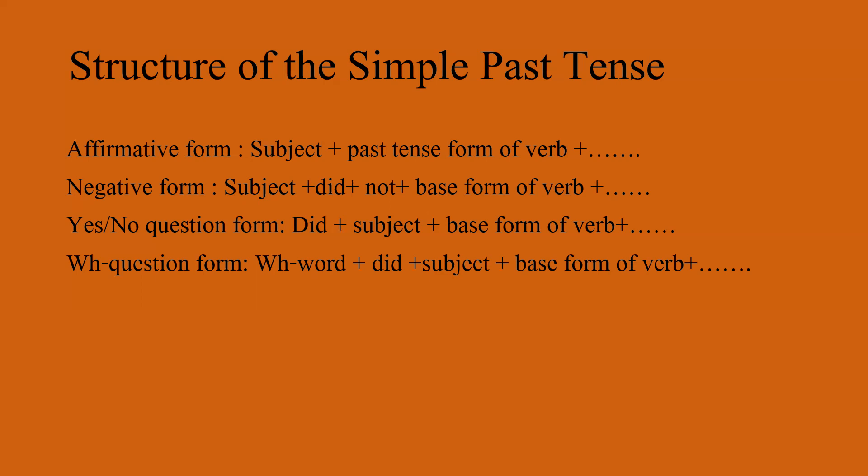The WH question form of the simple past tense is used to ask questions that require more detailed information. The structure of the WH question form is: WH word plus did plus subject plus base form of the verb plus object if any. For example, what did you eat for lunch? Where did they go on vacation?